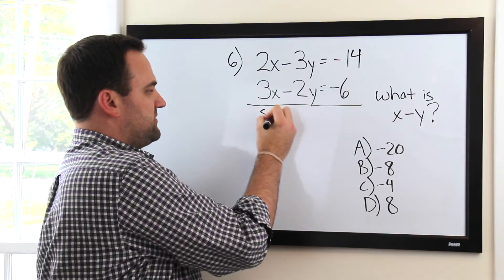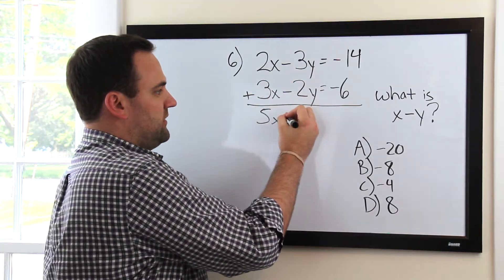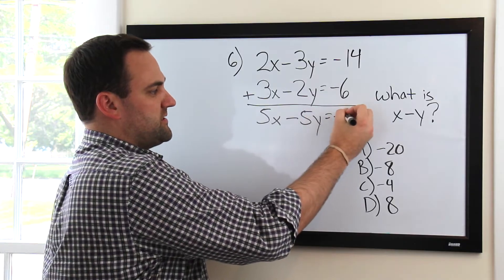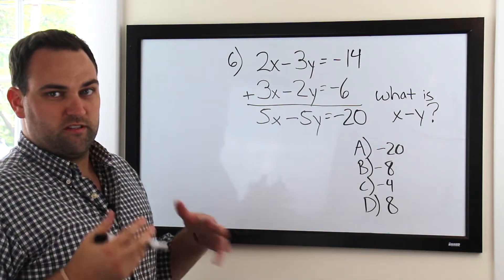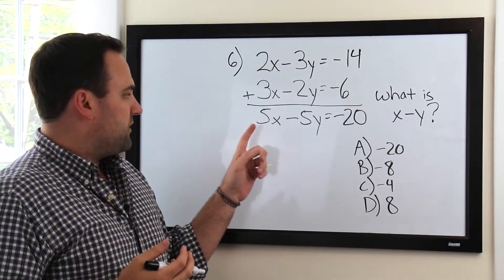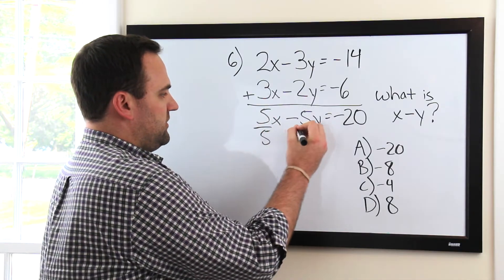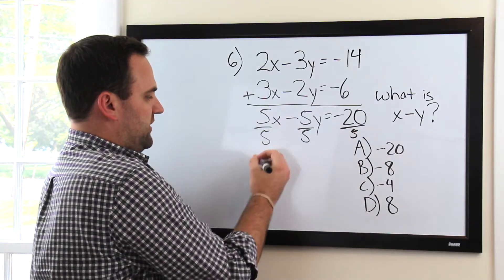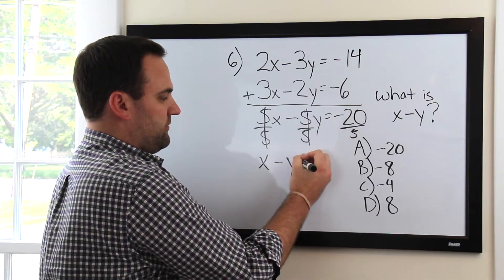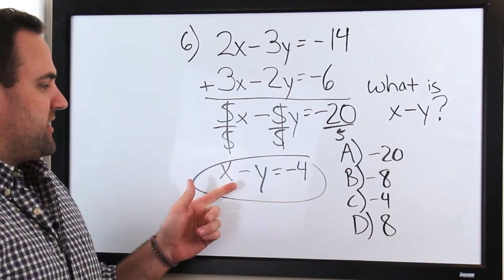So 2x plus 3x is 5x, and negative 3y plus negative 2y is negative 5y. And on this side, negative 14 plus negative 6 is negative 20. Right away you should see we're on the right track — we have our minus with x and y, and bells should go off: 5, 5, 20 — they're all divisible by 5. So if we divide each term by 5, we get x minus y equals negative 4. And you're done.